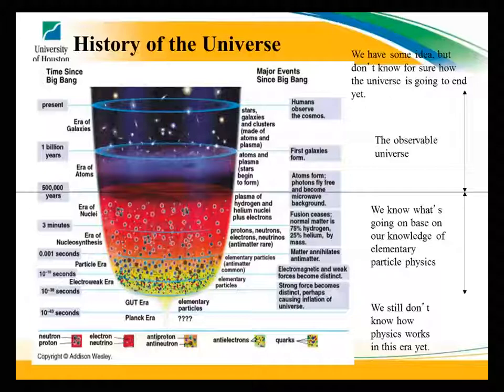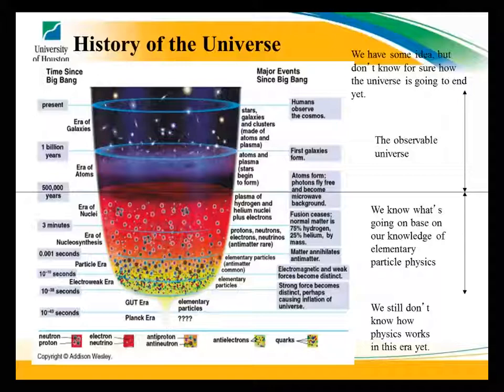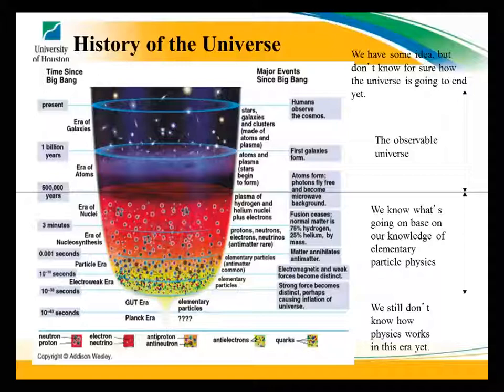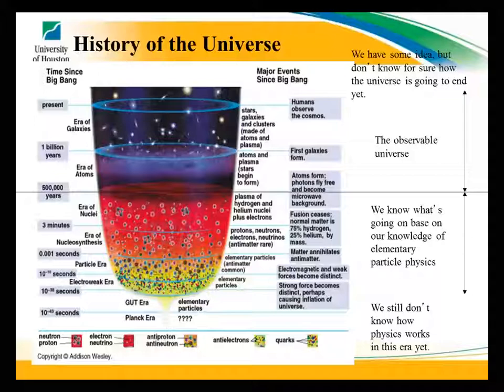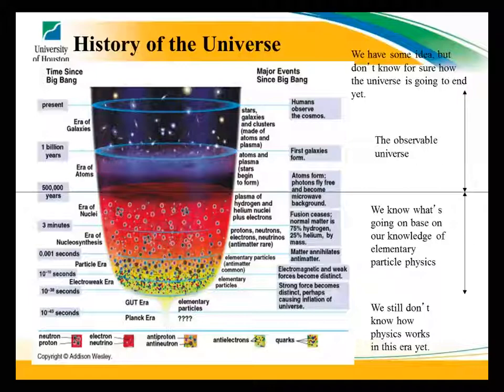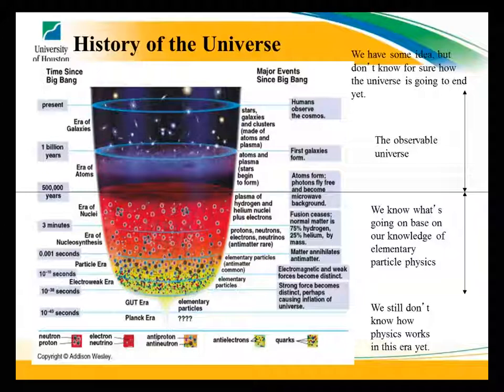The electroweak era is what they're studying at the LHC, the Large Hadron Collider. Going back further, at 10 to the minus 38 seconds, you get to the Grand Unified era, dealing with very theoretical physics. Beyond that is the Planck epoch, where you can't even use general relativity and quantum mechanics at the same time — the results are nonsensical. You actually need a quantum theory of gravity to make sense there. This is what I call the 'God knows what happened there' era.